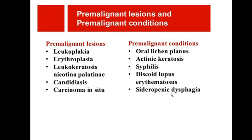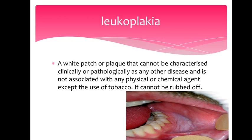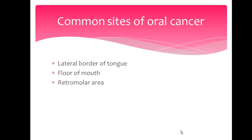Now, what is leukoplakia? Leukoplakia clinically appears as a white patch or plaque that cannot be characterized clinically or pathologically as any other disease, and is not associated with any physical condition or agents except the use of tobacco. It is commonly due to heavy tobacco use — smoking or chewing. Importantly, this lesion cannot be rubbed off; that is how you clinically identify leukoplakia.